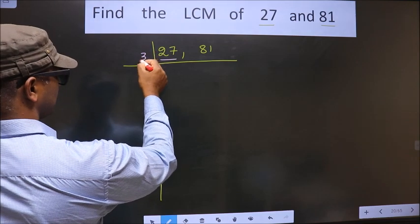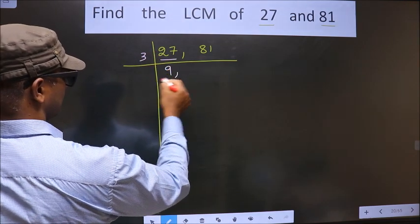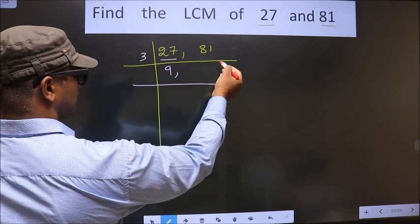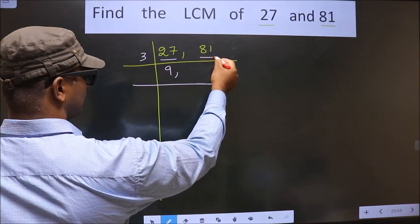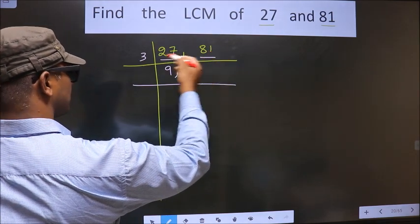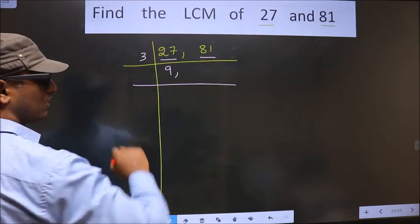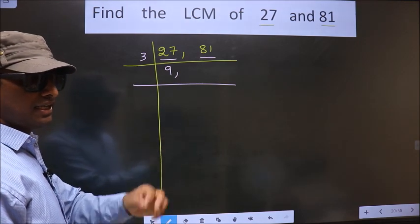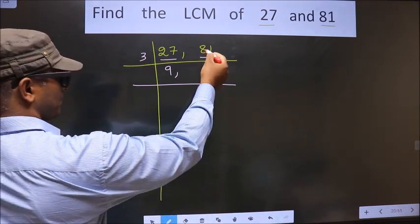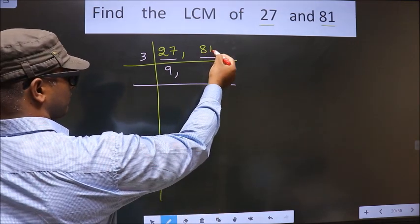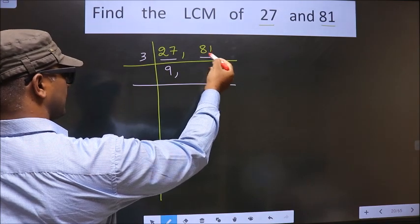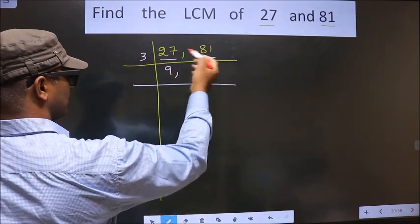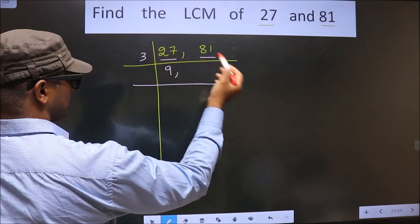27 is nothing but 3 nines, 27. Now for the other number, how do we check whether this is divisible by 3 or not? For that we add the digits — that is 8 plus 1, we get 9. Is 9 divisible by 3? Yes. So this number is also divisible by 3.